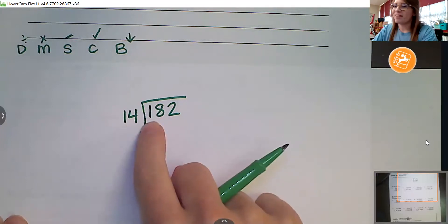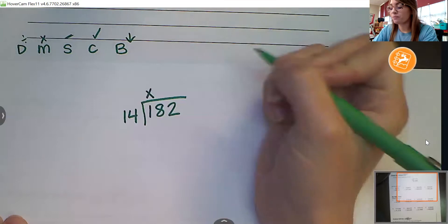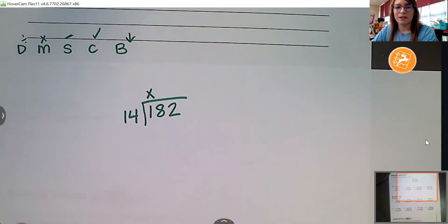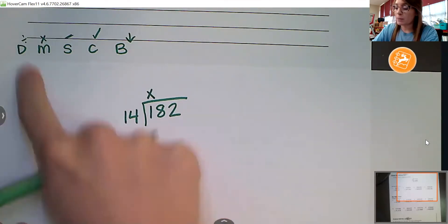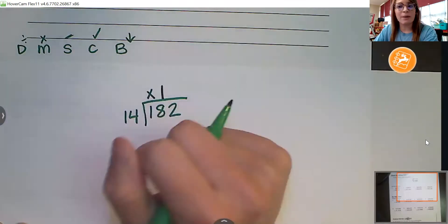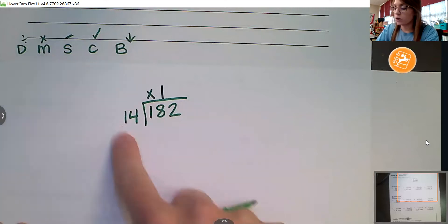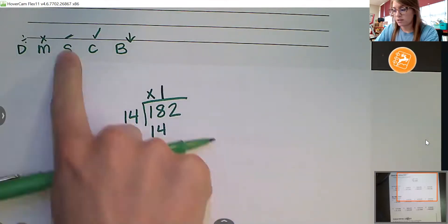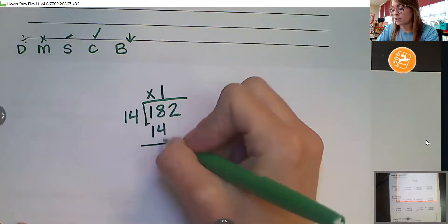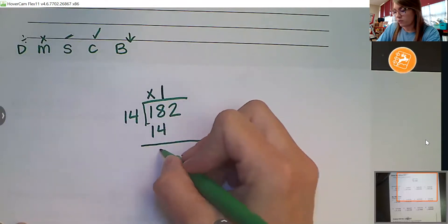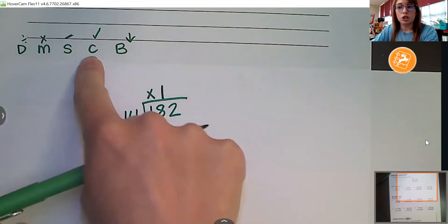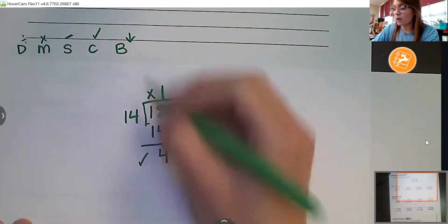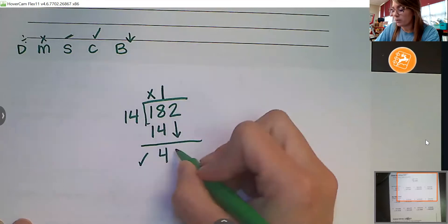Can 14 go into one? No, it cannot. So, we're going to put our placeholder there. Can 14 go into 18? Yes, it can. How many times can 14 go into 18? One time. Very good. So, I've divided. I'm going to put that one right up top. What's my next step? Multiply. Very good. 14 times one is 14. Then what do I do next? Good. Subtract. 18 minus 14. Eight minus four is four. Very good. Then I'm going to check. Is four less than 14? Yes, it is. So, we're good to go. And now we can bring down this next number right here.